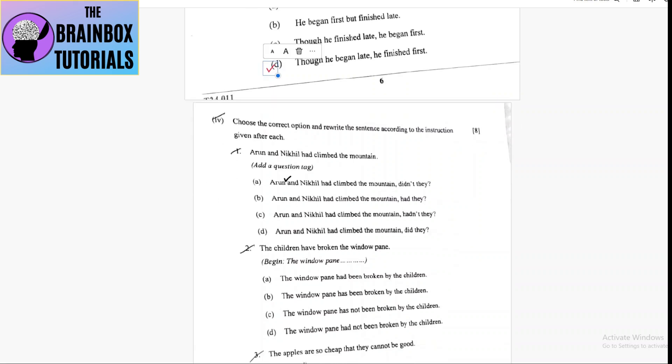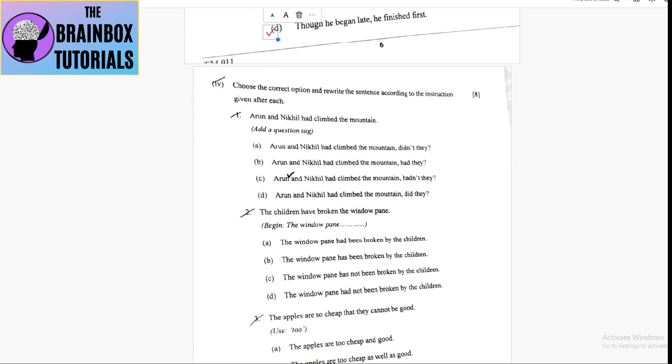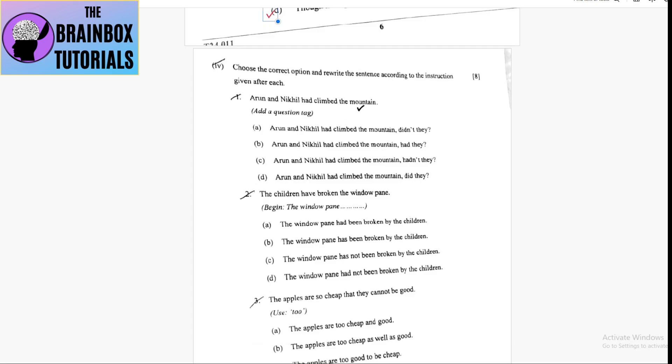Now coming to number four: do as directed. Number one: Arun and Nikhil had climbed the mountain, add a question tag. So because it is 'had' and it is an assertive sentence, positive sentence, question tag will be negative. So 'hadn't they'?